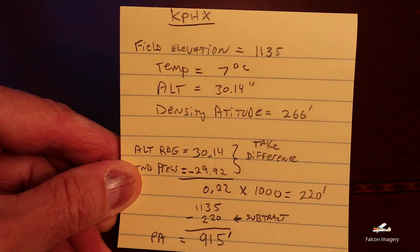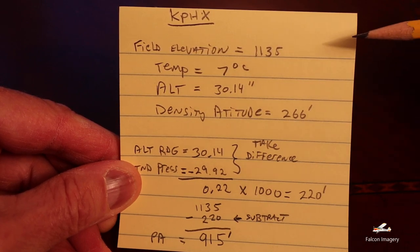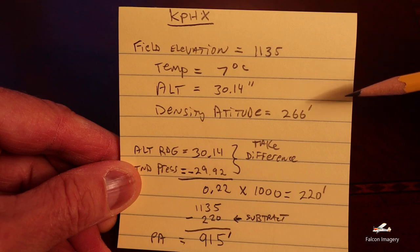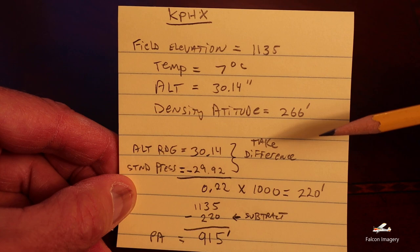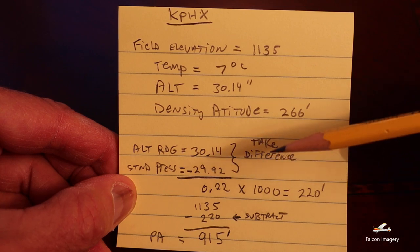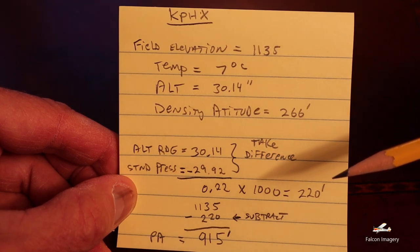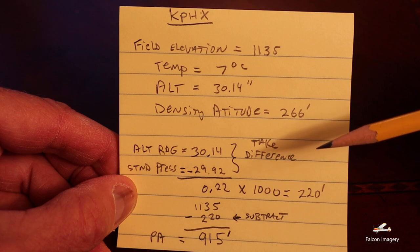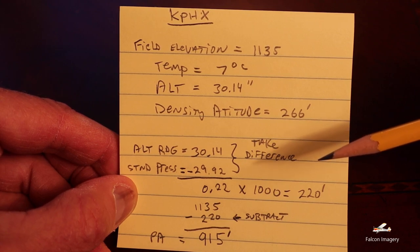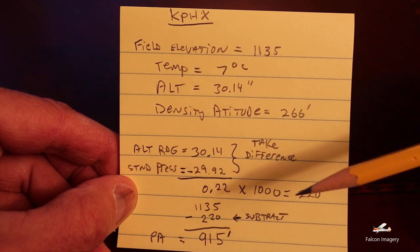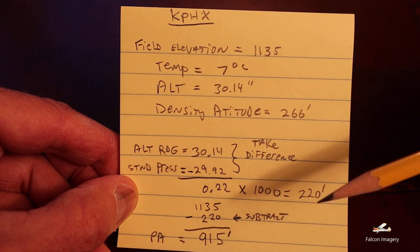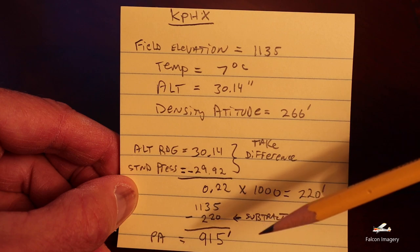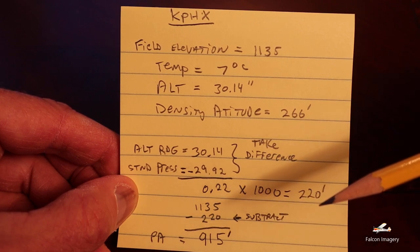How does that E6B determination of pressure altitude equate to the mathematical way? We have our field elevation at Phoenix of 1,135 feet, temperature of 7 degrees Celsius, altimeter 30.14 inches, density altitude 266 feet. To calculate pressure altitude, we take the difference between the standard pressure and the current barometric pressure: 30.14 minus 29.92 equals 0.22, multiplied by a thousand gives 220 feet. Since the altimeter reads higher than standard pressure, we subtract 220 from the 1,135 field elevation, giving us 915 feet. So what we determined on the E6B — just under a thousand feet — matches our calculated 915 feet.